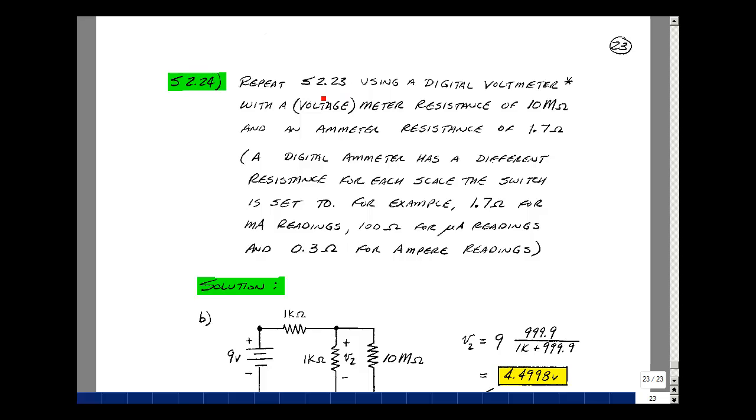In supplemental problem 223, we found the voltage across a 1K resistor by measuring with an analog voltmeter and then measuring it with an analog ammeter. Let's repeat that same exercise, but this time using a digital voltmeter, in particular the Fluke Model 87.